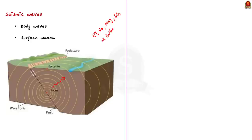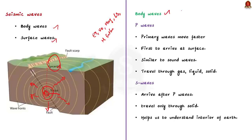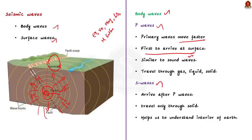During an earthquake, abundant energy is released along the fault line, causing earthquake waves that spread in all directions. The point where energy is released is called the focus or hypocenter of the earthquake. The point on the surface directly above the focus is called the epicenter. Body waves are generated at the focus and travel through the body of the earth. They are further classified into P waves and S waves. P waves, or primary waves, move faster and are the first to arrive at the surface — they are compression waves similar to sound waves.